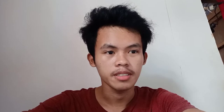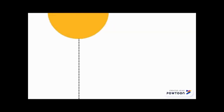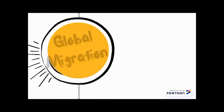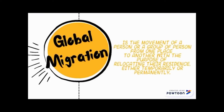Let's talk about global migration. Global migration is the movement of a person or a group of persons from one place to another for the purpose of relocating their residence, either temporarily or permanently.